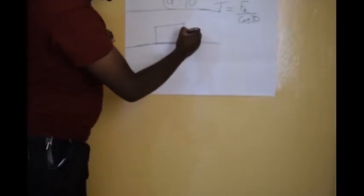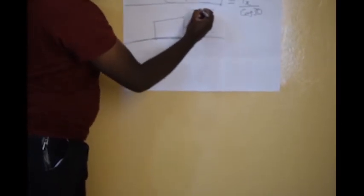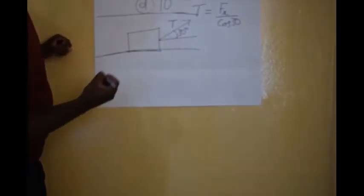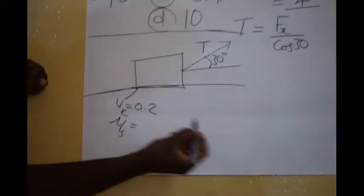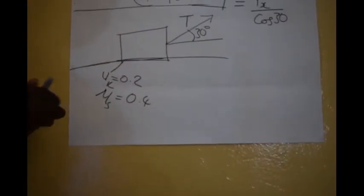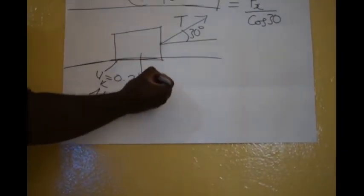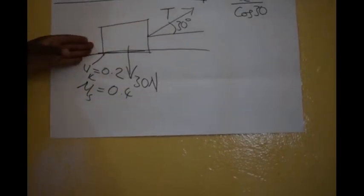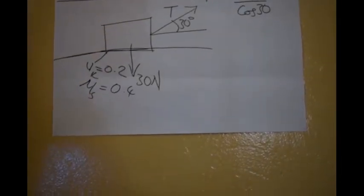Now, if the force was applied on a rope at an angle — say the tension is applied at 30 degrees — with mu K of 0.2 and mu S of 0.4, it becomes a bit more involved. You have 30 newtons as your weight, but you can't just assume the normal is still 30 newtons or that friction values remain 6 and 12 newtons. Everything changes, including the value of the friction force.